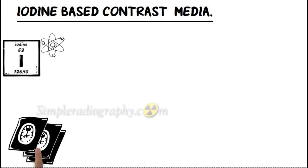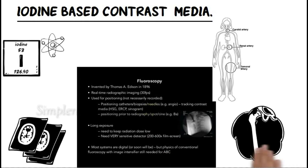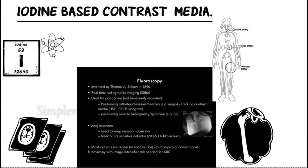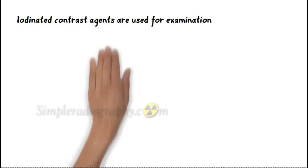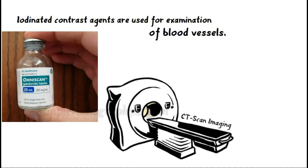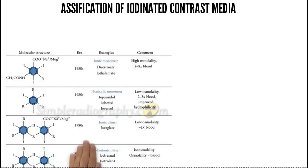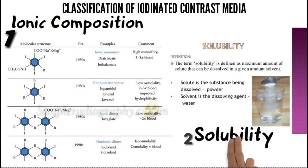Iodine-based contrast media are contrast agents that contain iodine atoms, used for X-ray-based imaging modalities such as computed tomography (CT), as well as fluoroscopy, angiography, venography, and occasionally plain radiography. Iodinated contrast agents are used for examinations of blood vessels and can be classified based on ionic composition and water solubility.